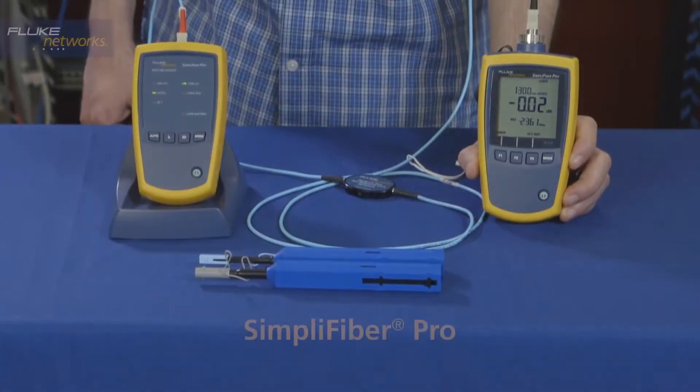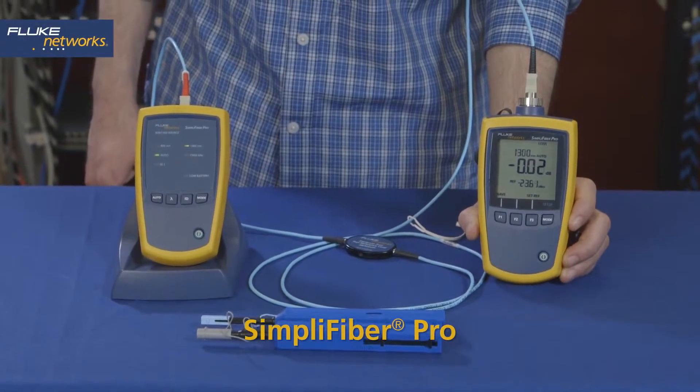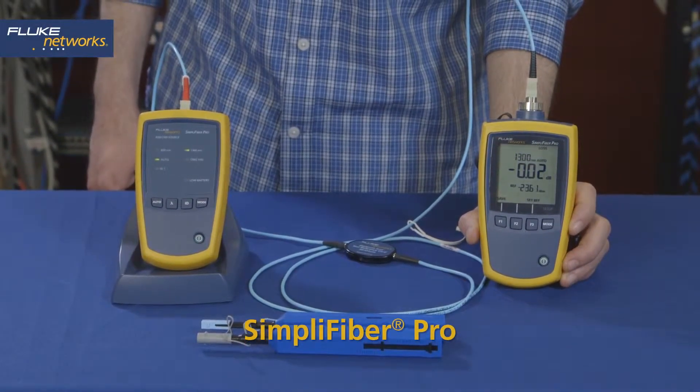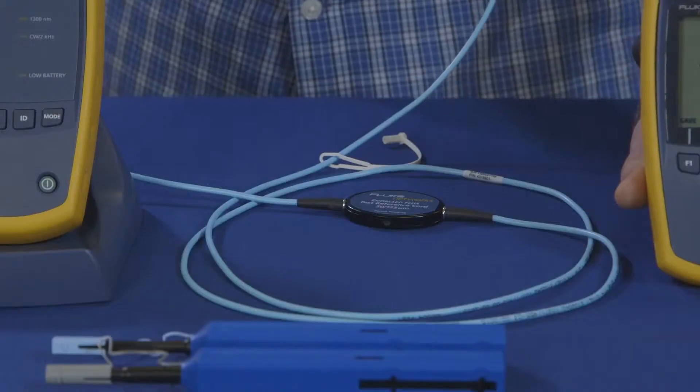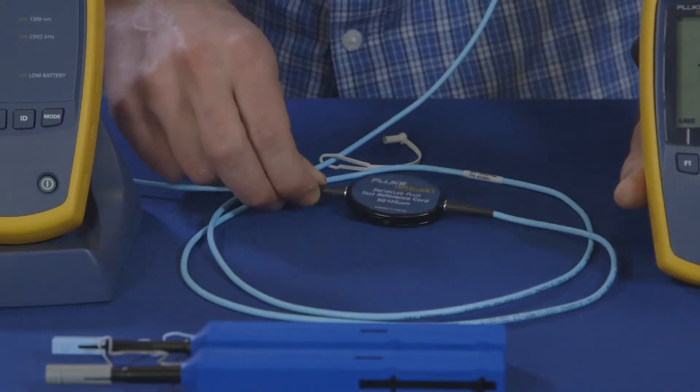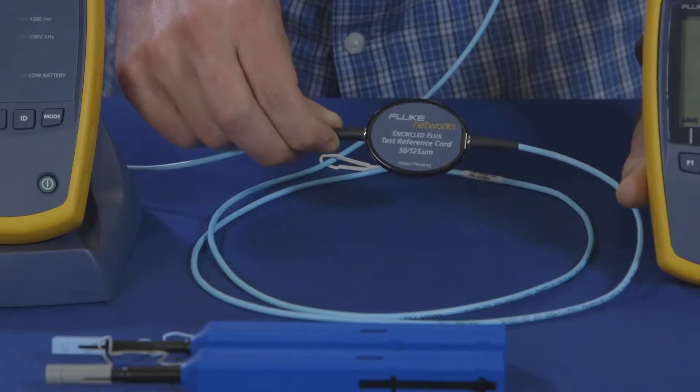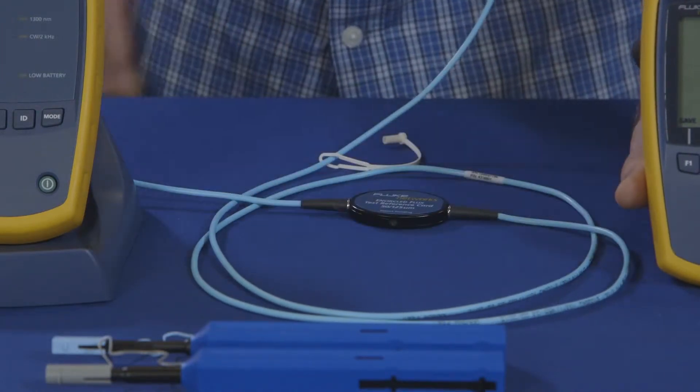We're going to show you how to use the Fluke Network SimpliFiber Pro to take a loss measurement. We'll use our SC interchangeable adapter and our multi-mode encircled flux test reference cords, or TRCs, which we've already cleaned and inspected.